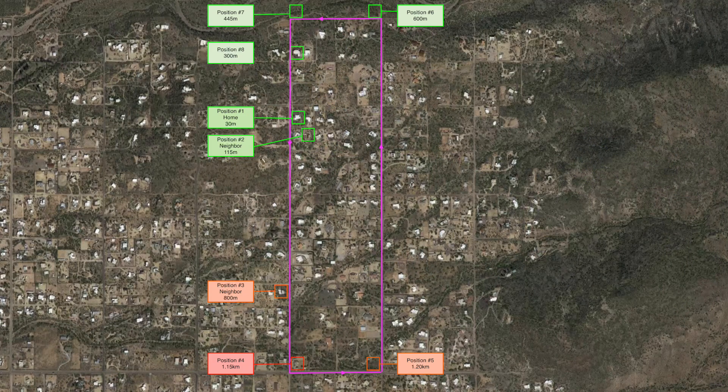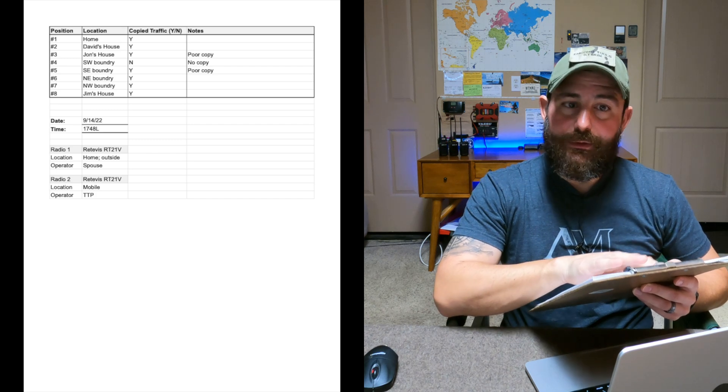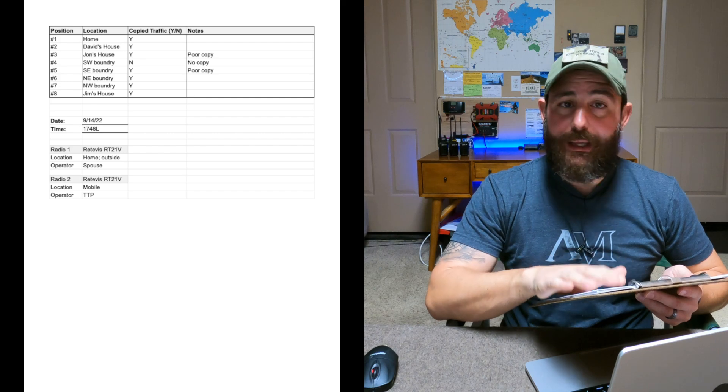For this mission, I had five different quantities including myself, and a couple of waypoints to hit over the course of about two and a half miles going through my neighborhood. I used two of the Retevis RT21Vs. My wife was positioned in her backyard to simulate the TOC, and I basically ran on foot and would stop to establish communication at each position. For tracking, I gave her a clipboard with the list of the eight positions, the locations, whether she copied the traffic yes or no, and some notes. She did a fantastic job, except for that little blooper at the beginning. Let me fire up the laptop and show you the map, the results, and some video of all eight test transmissions.